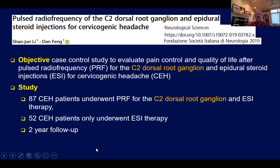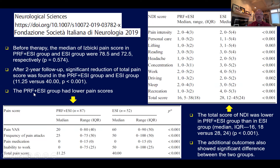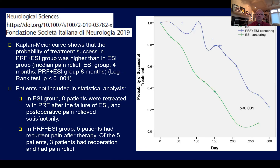Another study by Lee and Fang examined pulsed RF of the C2 DRG combined with epidural steroid injections in 87 patients versus cervical epidural steroid injections alone in 52 patients, followed for two years. The combination of pulsed radio frequency with cervical epidural steroid injections outperformed epidural steroid injections alone substantially, both for pain levels and neck disability indices. Patients improved both subjectively and somewhat objectively. The total neck disability index scores were lower when pulsed RF of the DRG was added to the cervical epidural steroid injection compared to cervical epidural steroid injections alone.